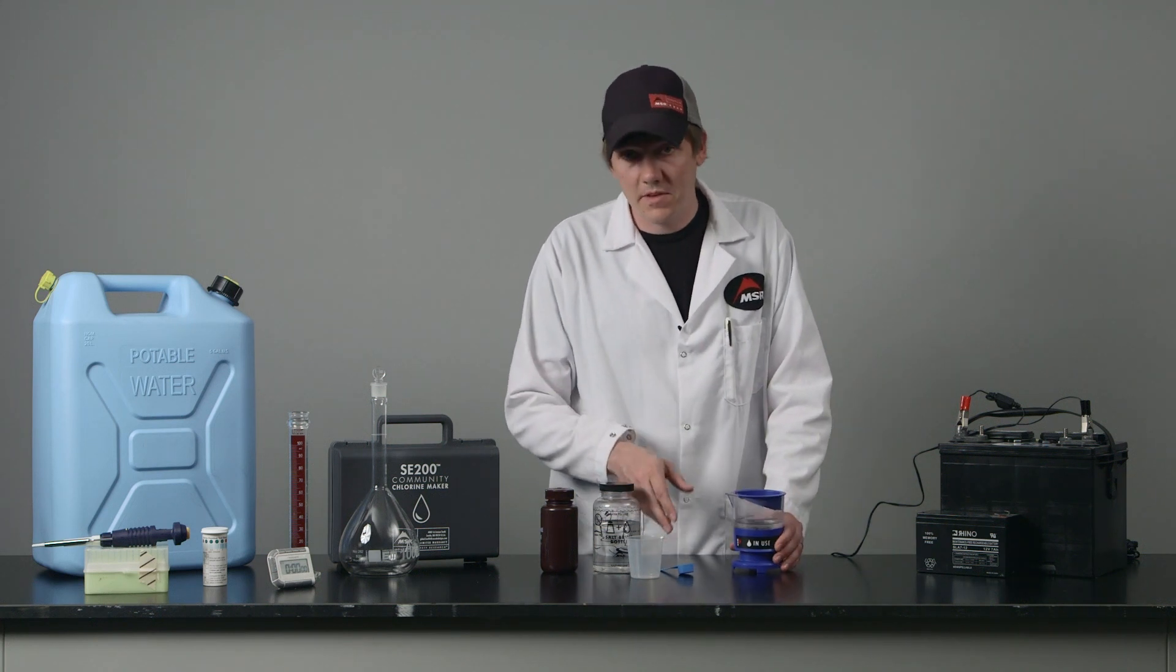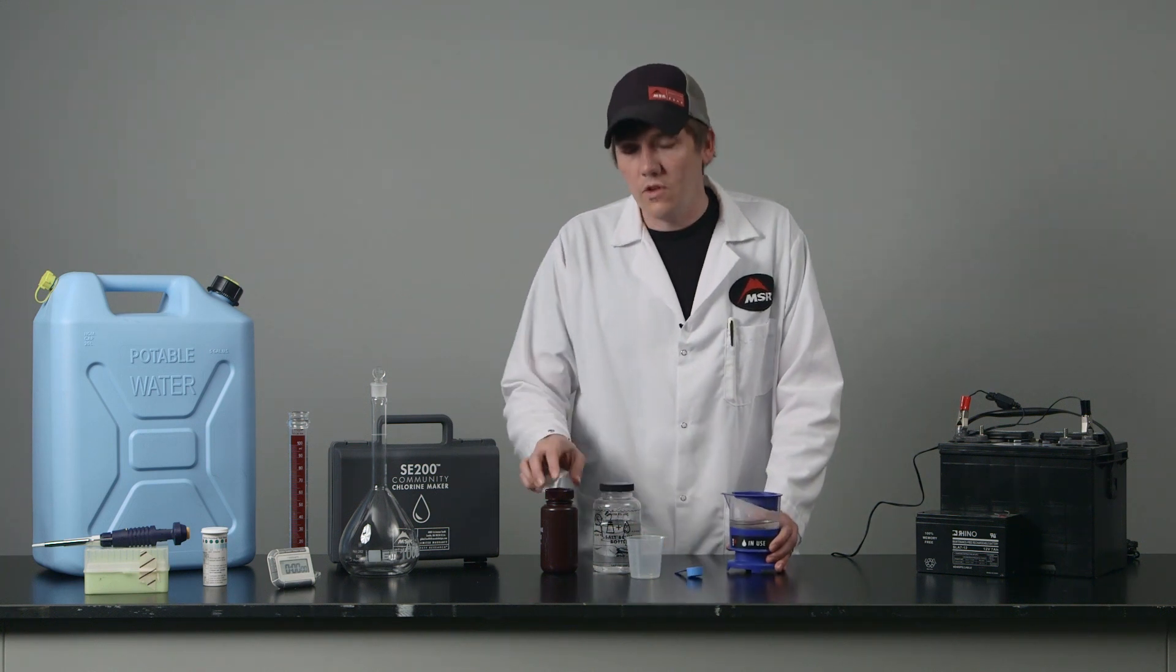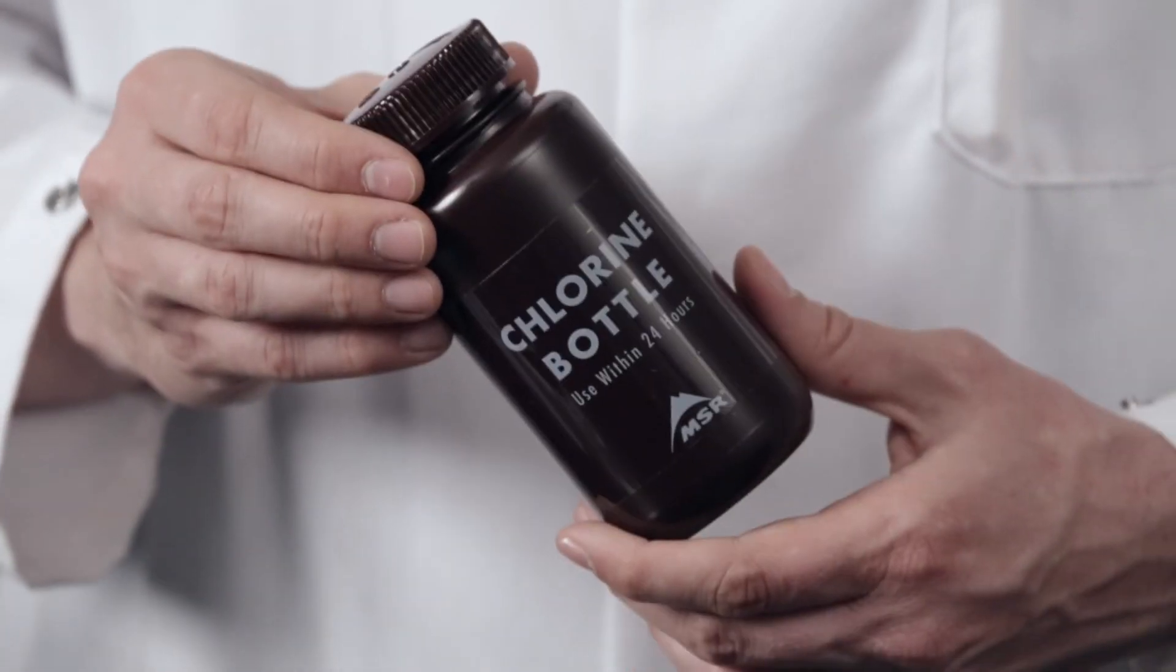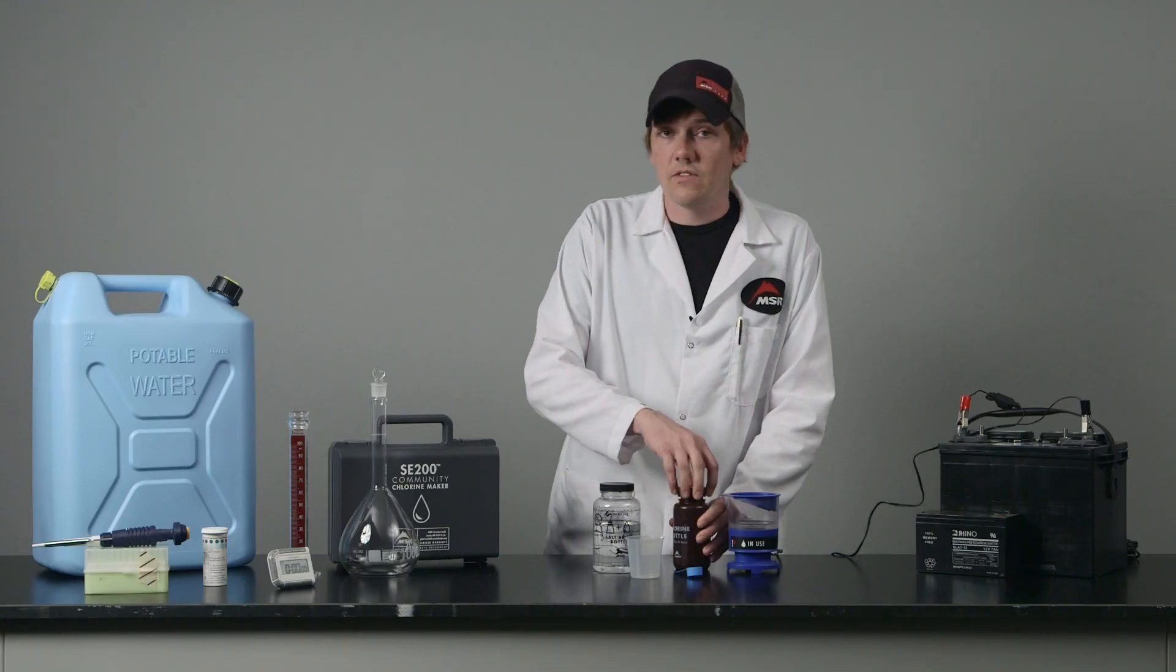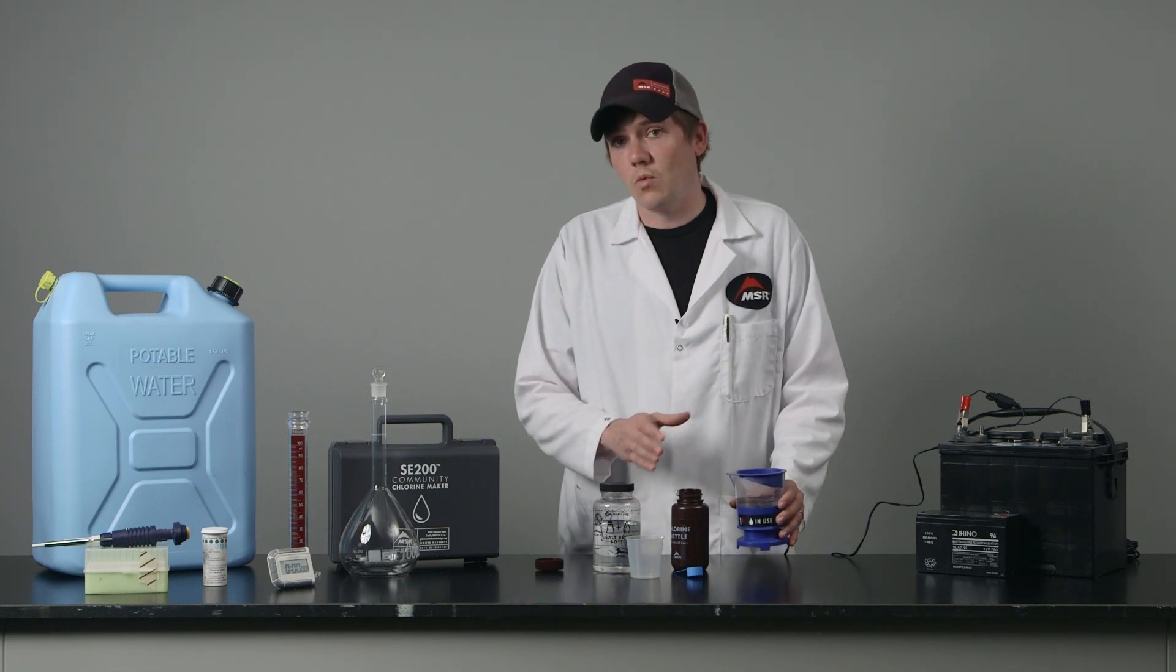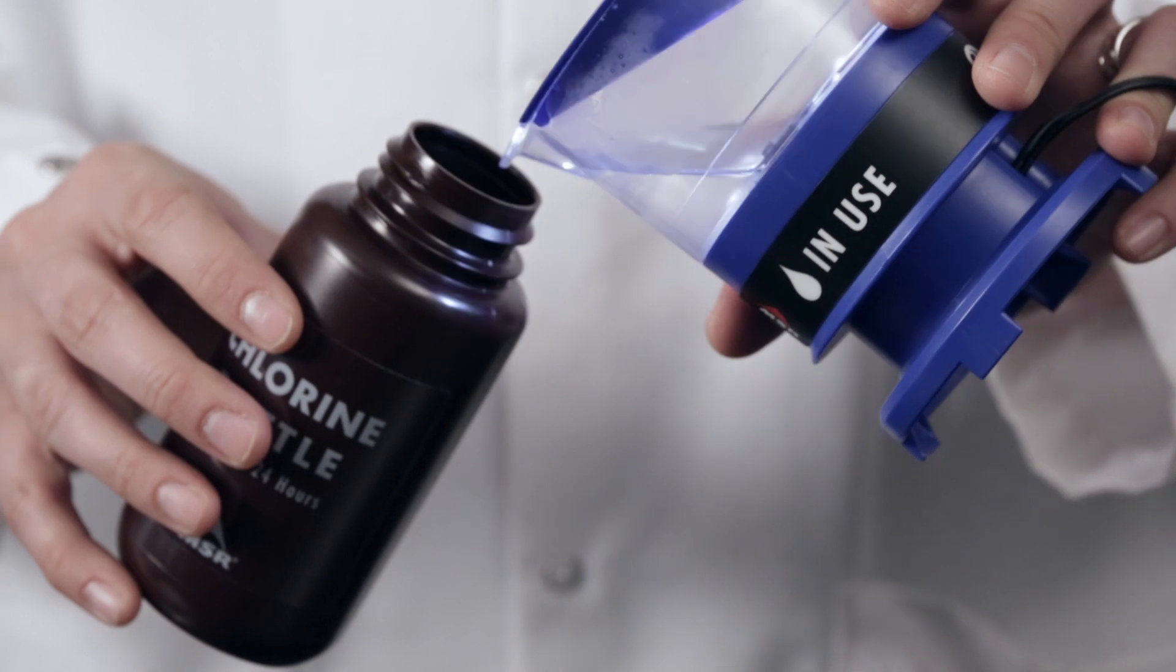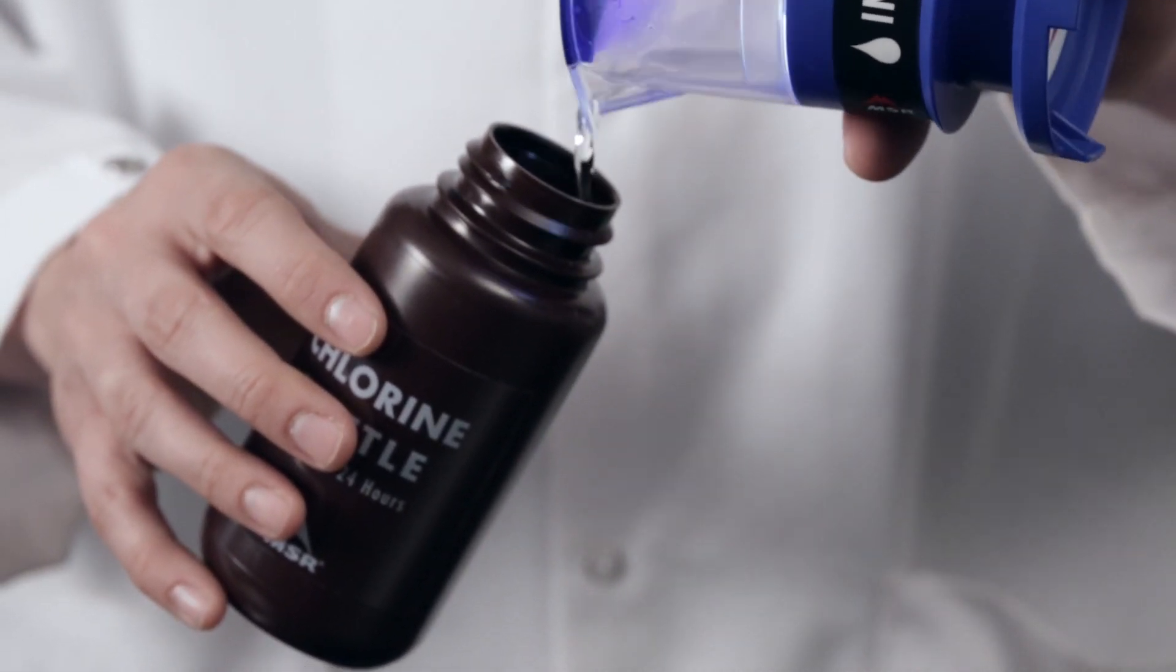You can dose directly from the device by pouring into the scoop, or if you want to dose it later, you can use the storage bottle that comes with the kit. This allows you to either transport the solution farther away from where you store the battery, or to use it later in the day as it keeps this chlorine fresh for up to 24 hours.